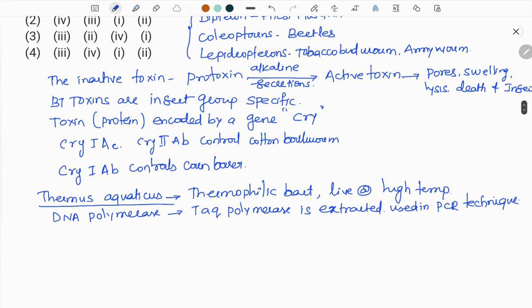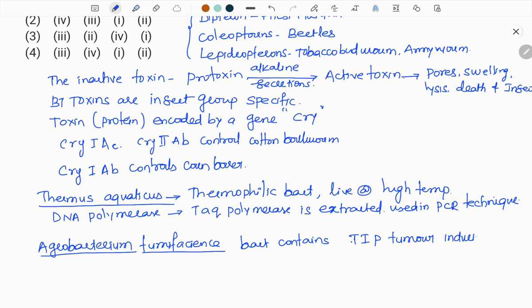Next we discuss Agrobacterium tumefaciens. This bacteria causes tumours in plants. It contains a tumour inducing plasmid called TIP, which stands for tumour inducing plasmid. When a plant is attacked by Agrobacterium tumefaciens, it causes formation of tumours inside the host plant, so that disease is called crown gall.